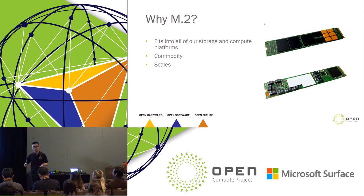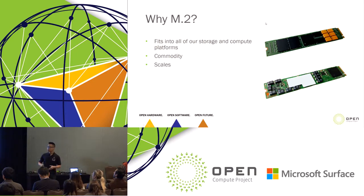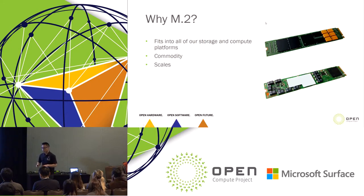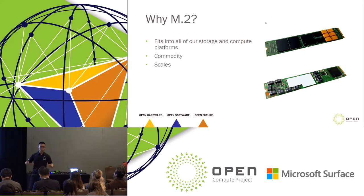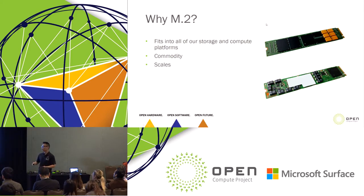Second, it's a commodity — there are lots of vendors with M.2s in their roadmap, which is a great thing. Third, it scales. What will hopefully be apparent in the Ava design is that it's very easy to scale from one M.2 to four M.2s with drives you've already selected and qualified, and the performance will scale alongside it because you're adding more M.2s.